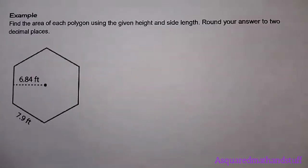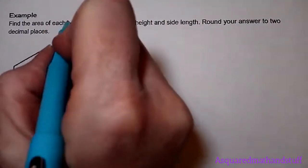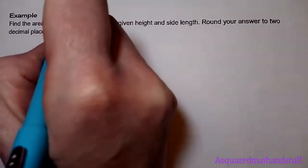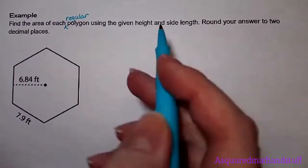Hello math friends, welcome to a squared math and stuff. In this example we are focusing on a polygon and we're looking to calculate the area being given the height and a side length. This is actually going to be a regular polygon—I forgot to put that in here when I was typing it.